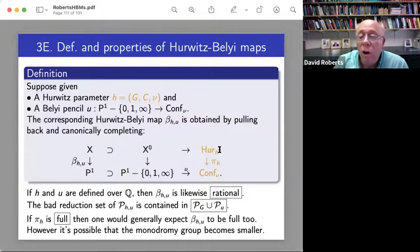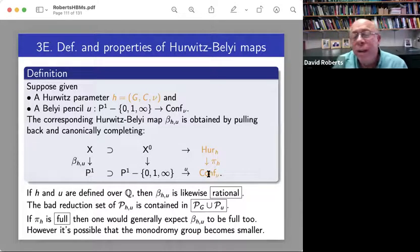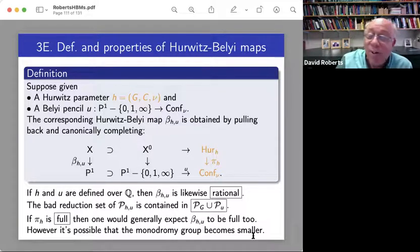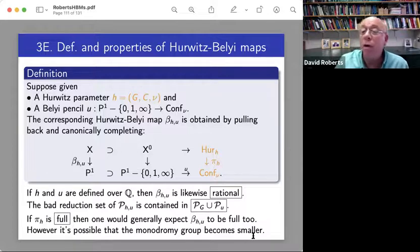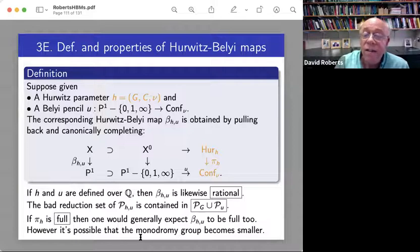And we should have pretty good control over monodromy groups as well, because these things are almost always full with the right hypothesis. And normally in algebraic geometry, when you take a slice of something, fundamental groups do not drop.